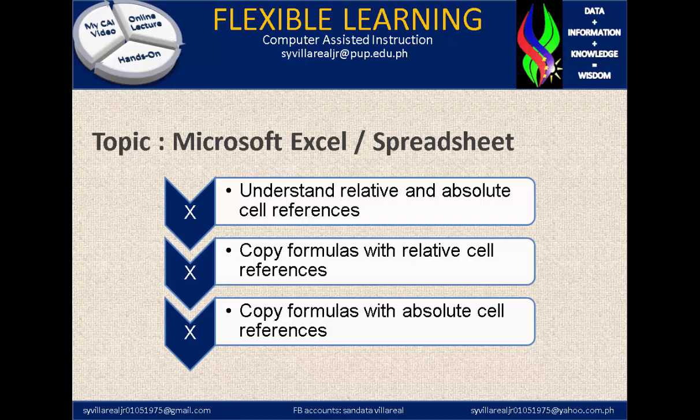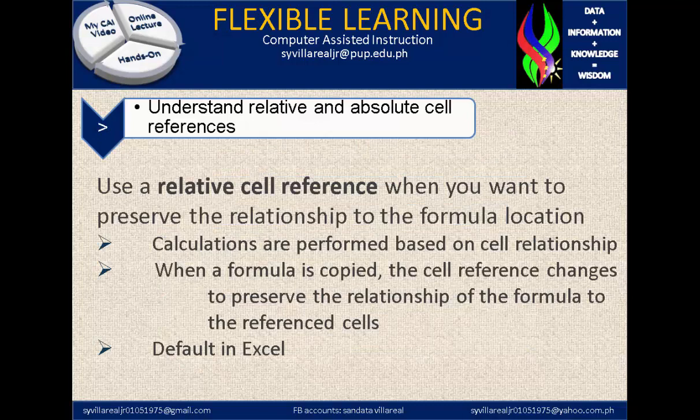Let's move on to topic number 1: understanding relative and absolute cell references. A relative cell reference is used when you want to preserve the relationship to the formula location, such that calculations are performed based on cell relationship. When a formula is copied, the cell reference changes to preserve the relationship of the formula to the reference cells.